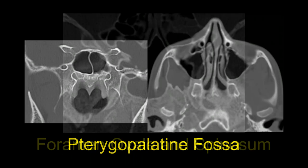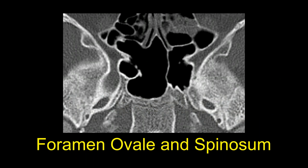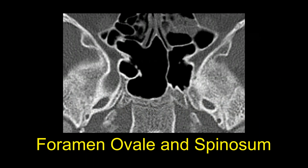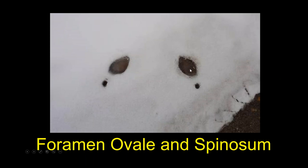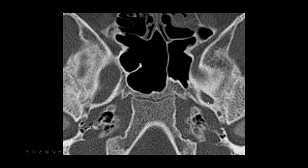A helpful landmark is the high-heeled footprint of the skull base: find the condylar head, its medial portion, go one centimeter medial and one centimeter anterior — that's foramen ovale, the oval part of the high-heeled footprint, where V3 is going through. The spine of the shoe is foramen spinosum, where the middle meningeal artery travels. This is how we find V3 and follow it through ovale.